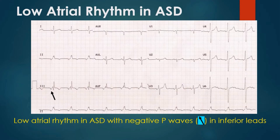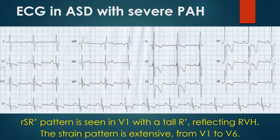In addition, there is notching of the QRS complex in lead 2, suggesting the crochet touch sign. R, S, R-prime pattern is seen in V1 with a tall R-prime reflecting right ventricular hypertrophy. The right ventricular strain pattern — ST depression and T wave inversion — is extensive from V1 to V6. This indicates that the hypertrophied and enlarged right ventricle is occupying the whole of the anterior surface of the heart.